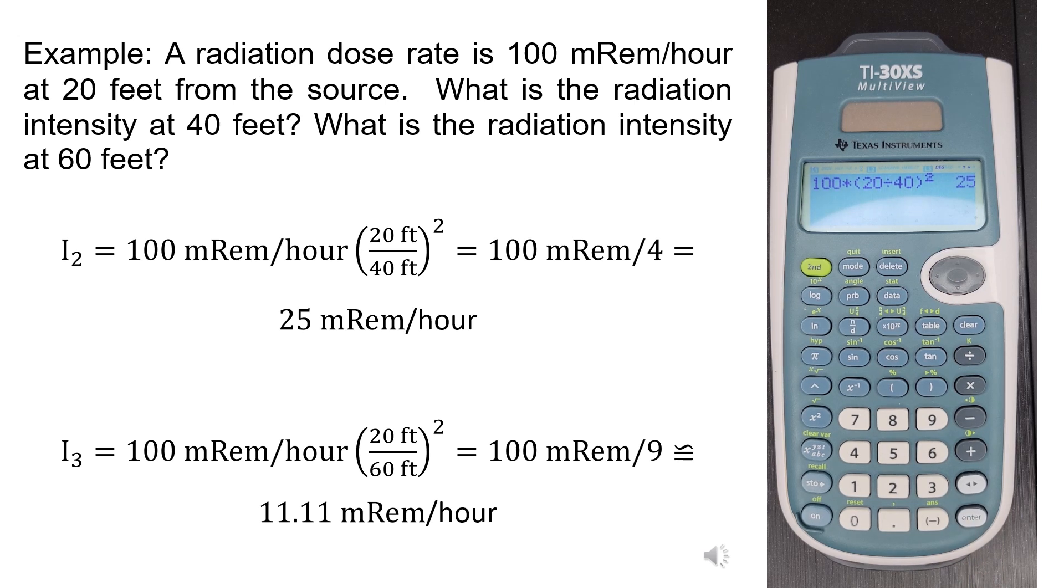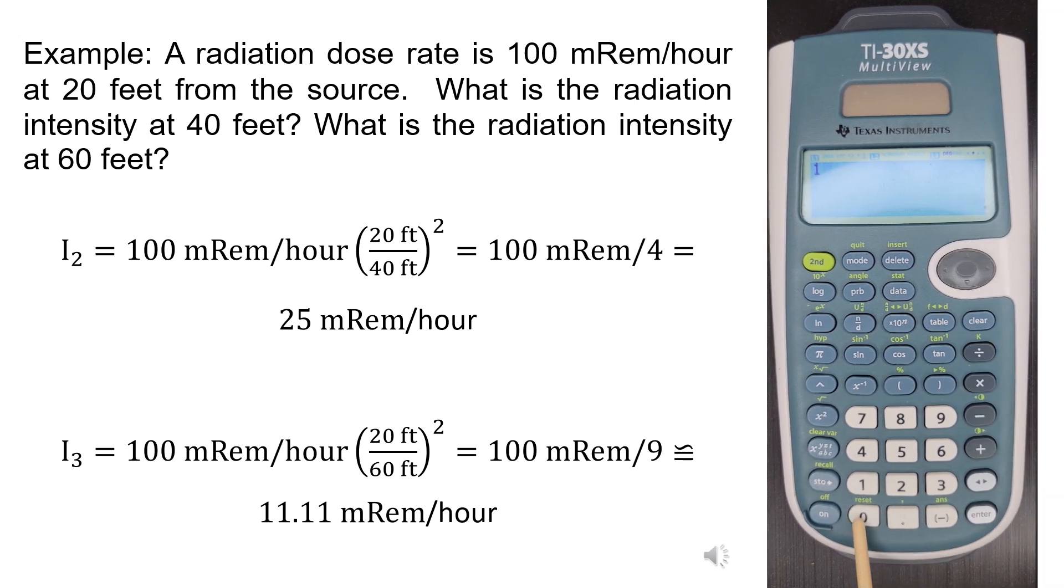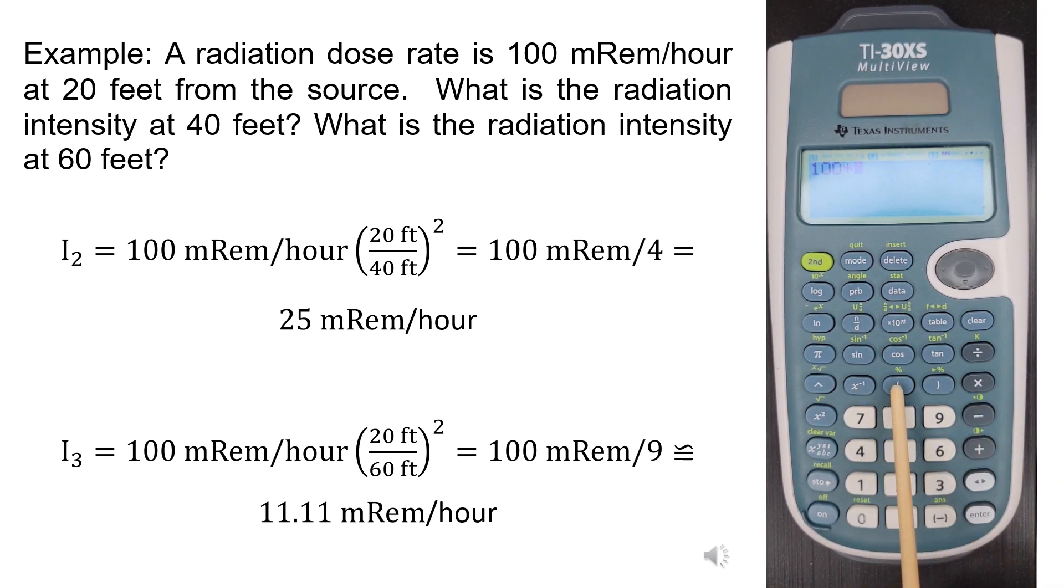For 60 feet, we have 100 times (20 divided by 60) raised to the power 2, which results in approximately 11.11 mRem per hour.